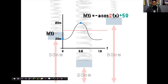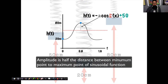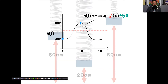Now I'll focus on a, the amplitude. We actually found the amplitude earlier when looking for the midline. If our midline is 50, the amplitude is the distance from the midline to the highest point: 80 − 50 = 30. So a = 30. That's my complete equation. I've just completed part b: h(t) = −30 cos(2π/1.6 · x) + 50.